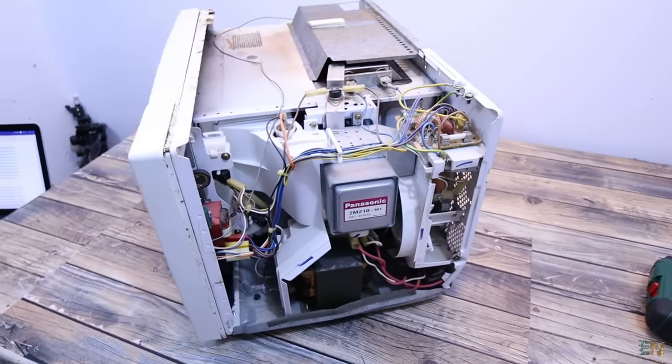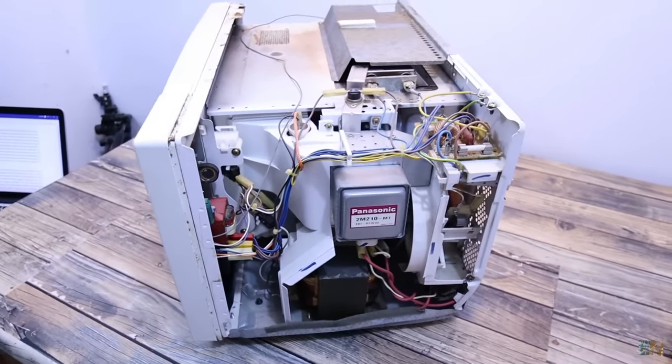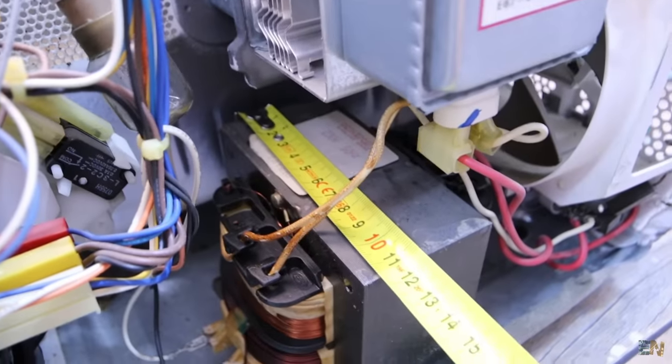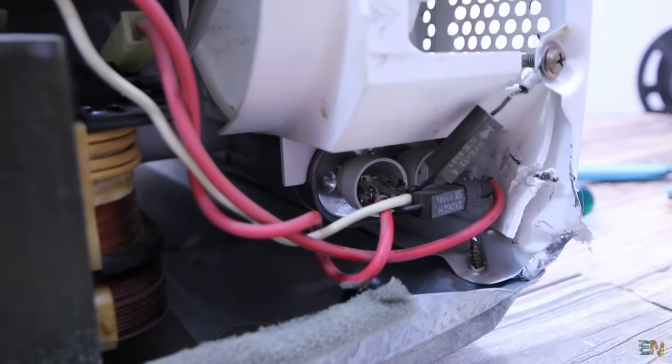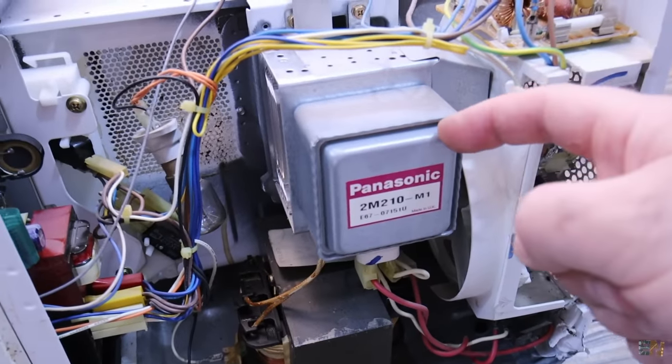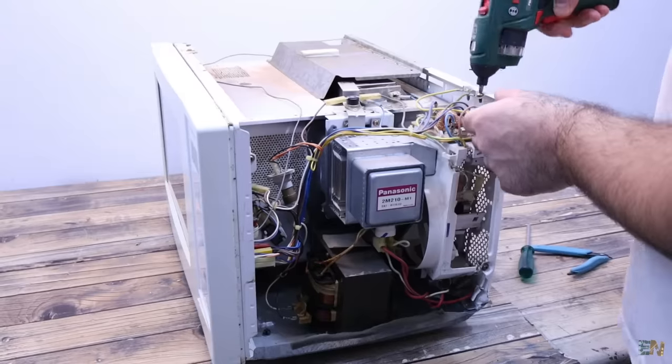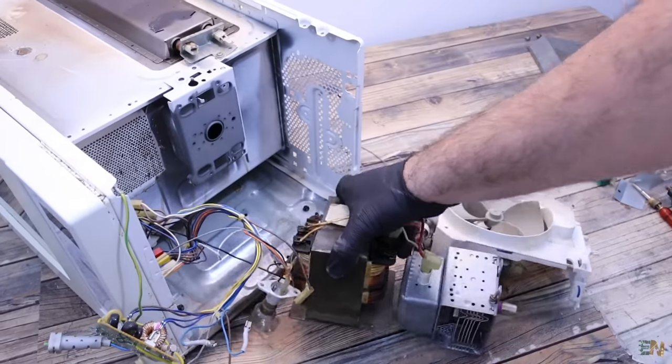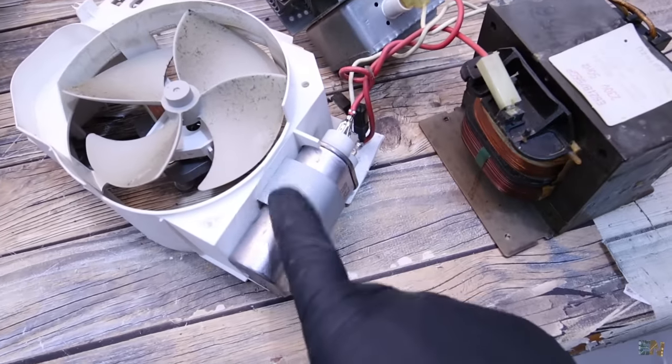So once I have the oven open, I can take out all the parts. We can see a huge high voltage transformer. We also have a huge capacitor on the side and the magnetron which is this part here. So I will take these three parts out. In a few minutes I have the transformer connected to a huge capacitor and the magnetron.